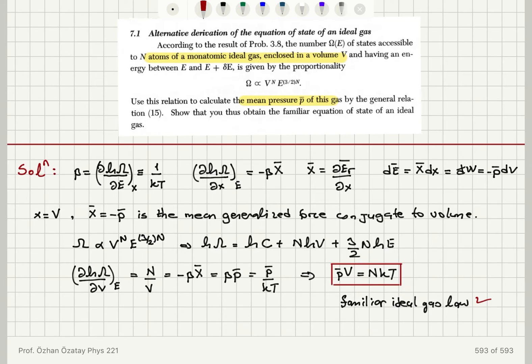when the volume is our external parameter that is changing and affecting the energy levels of the system, the mean generalized force conjugate to volume is minus p bar. That is the pressure applied by the gas, not on the gas.